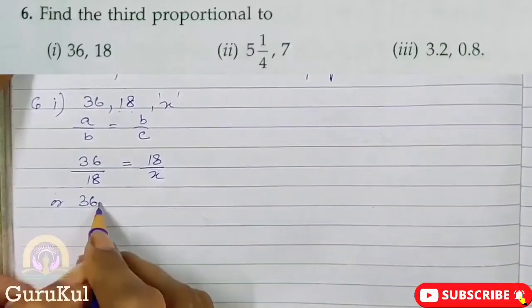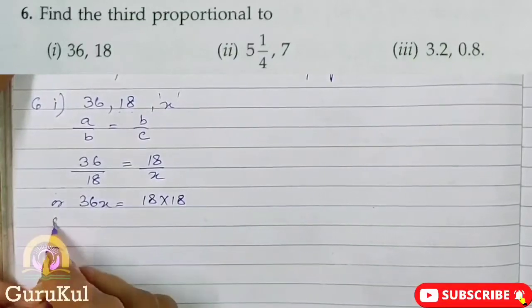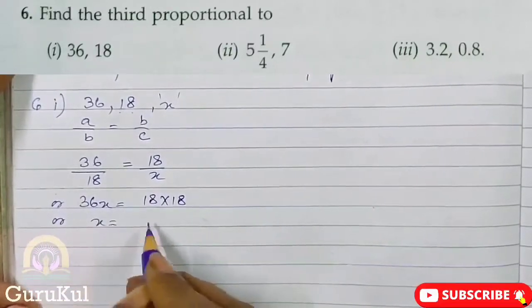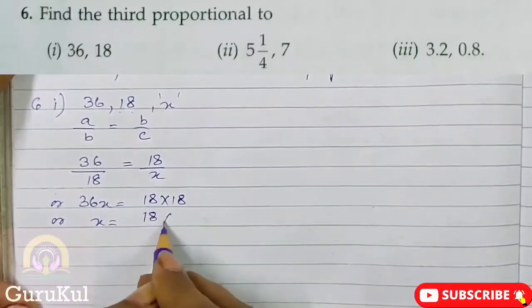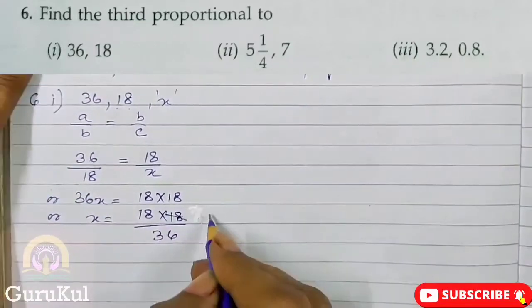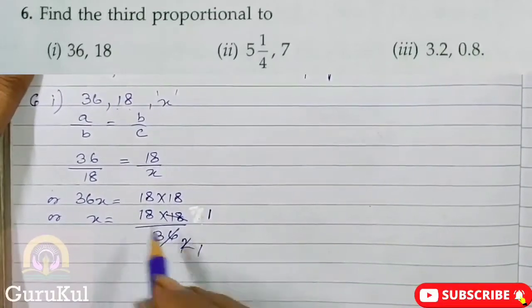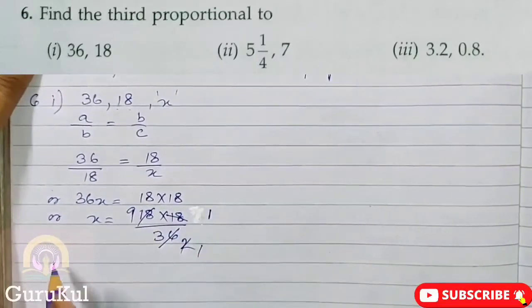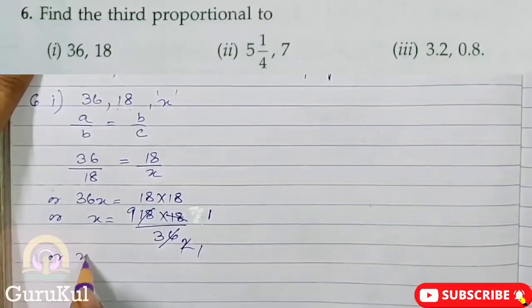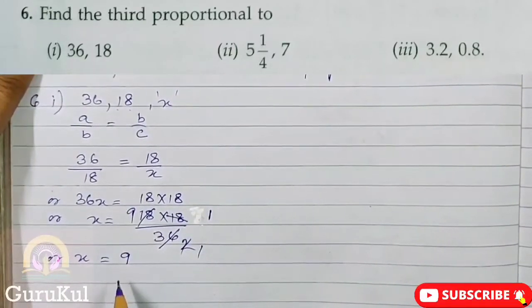Or, 36X is equal to 18 into 18. 18 ones are 18, 18 twos are 36. Two nines are 18, divided by 36. So the value of X is 9. So the third proportion is 9.